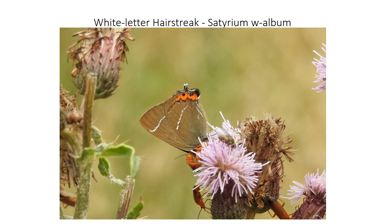The white letter hairstreak is not common in Buxton. There are four or five places where it's been seen, but only ever singles. It's not an easy thing to spot — it's basically a butterfly that lives in the canopy and will occasionally come down to feed on thistles. If you see a brown butterfly like this one, it's going to be the white letter hairstreak; we don't have any others like this in Buxton.